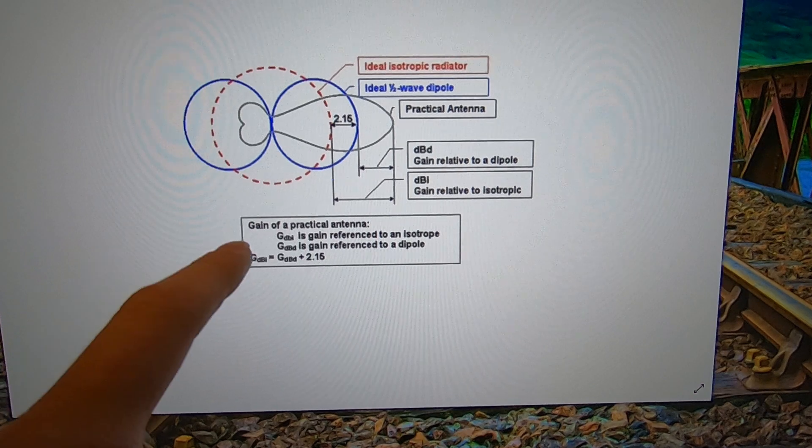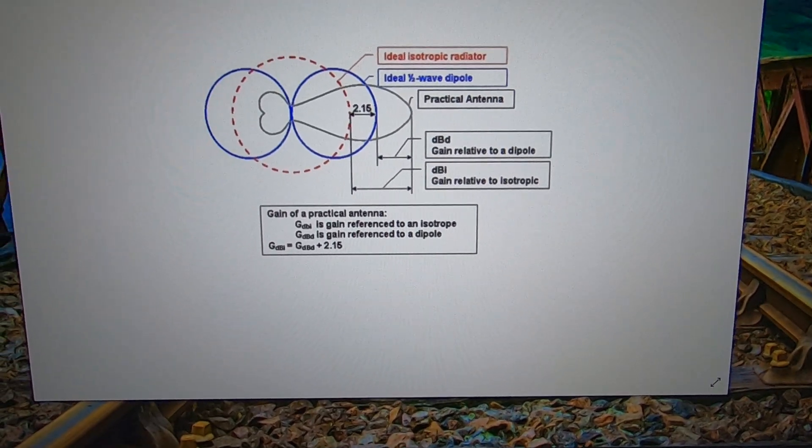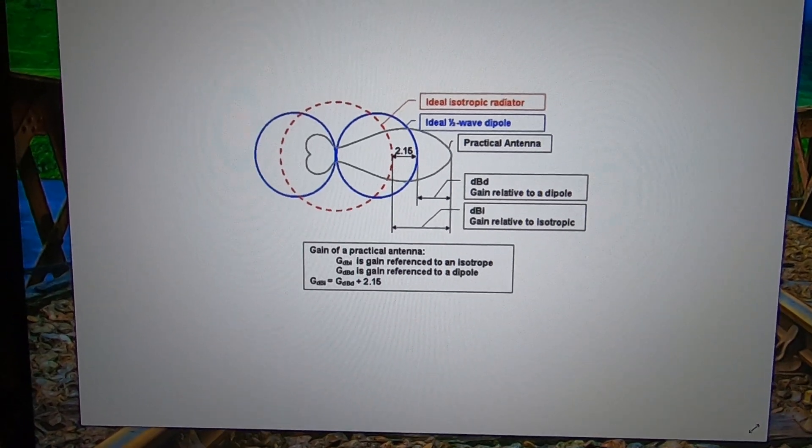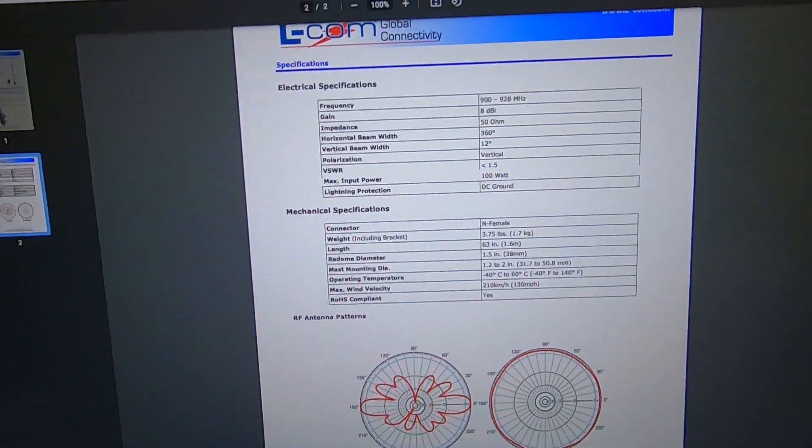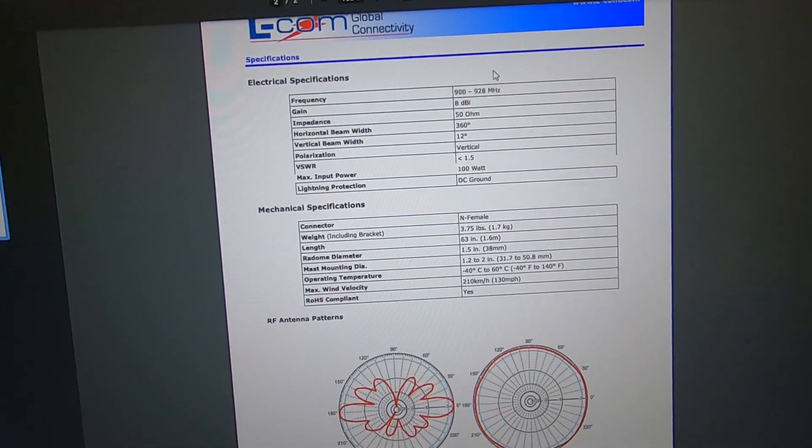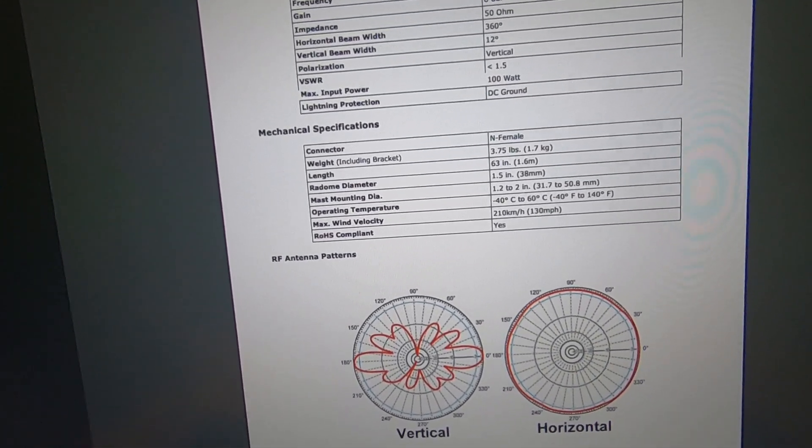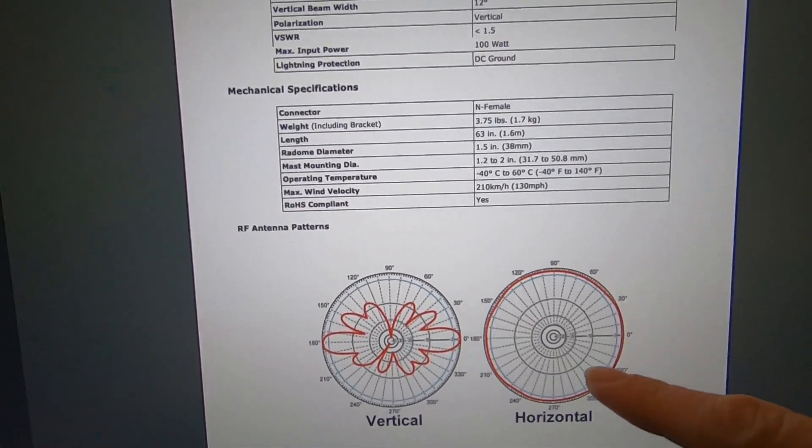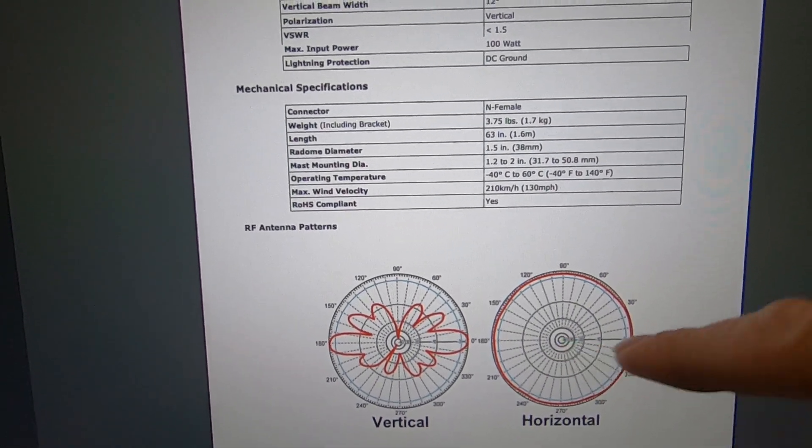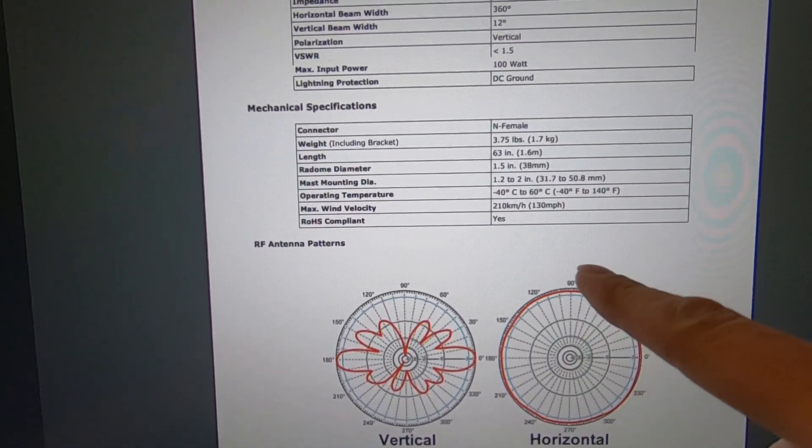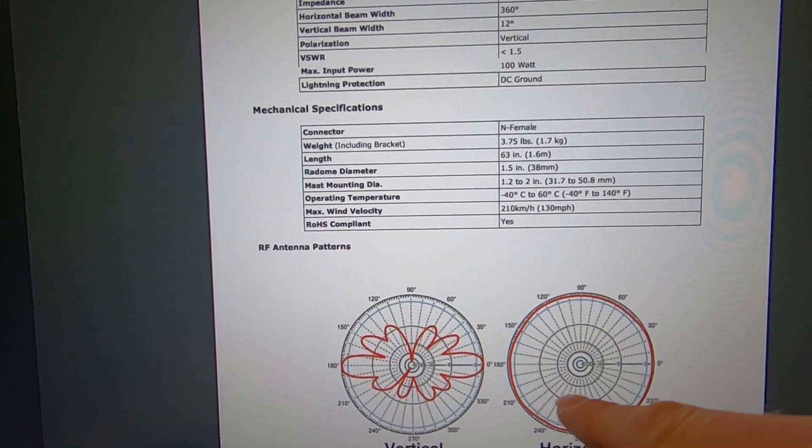All right, now let's look at a radiating pattern of an 8 dBi gain omni. So the reason why it's an omni antenna is when we're looking at the tip of the antenna down at it, you're going to notice it's a 360 degree pattern.